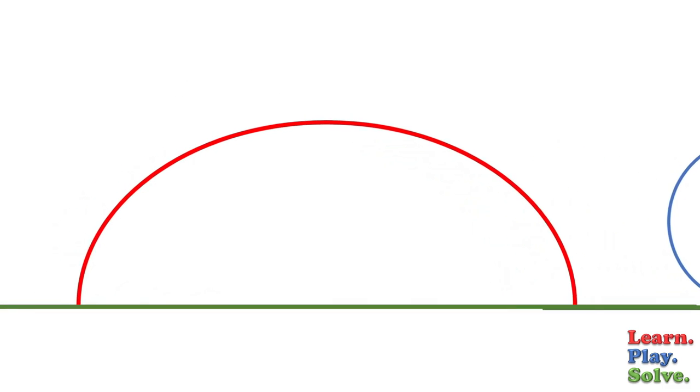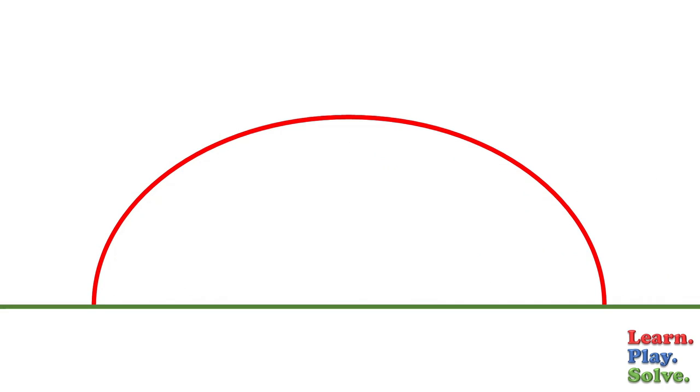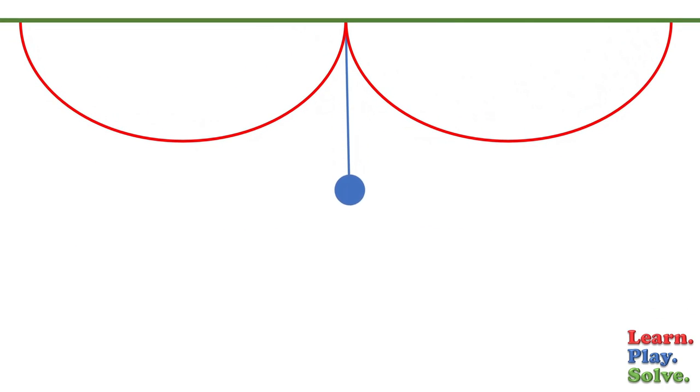Cycloids have some interesting properties when you place them in the physical world. If you invert two cycloids and suspend a pendulum between them that is half their length, the path of its swing will also be a cycloid.